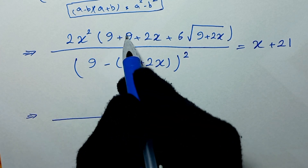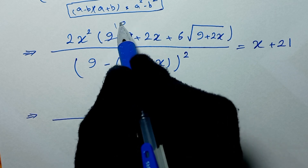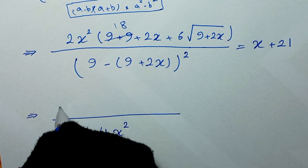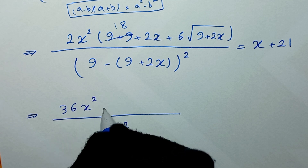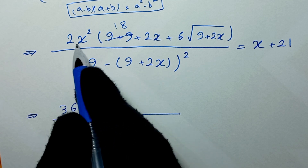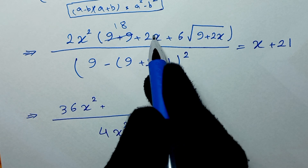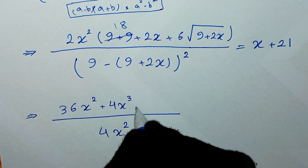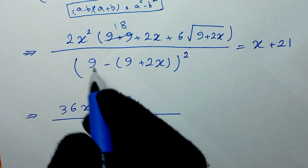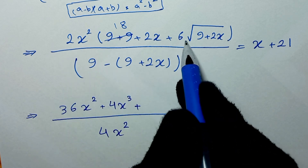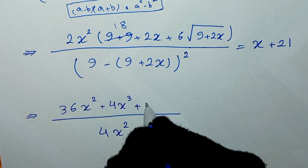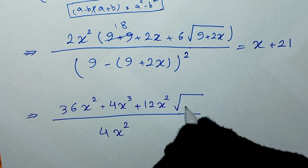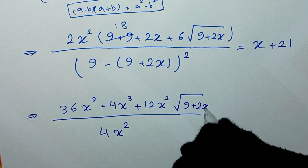So 9 plus 9 is 18, giving 2x² times 18 equals 36x². Plus 2x² times 2x equals 4x³. Plus 2x² times 6 square root of (9 plus 2x) equals 12x² square root of (9 plus 2x).